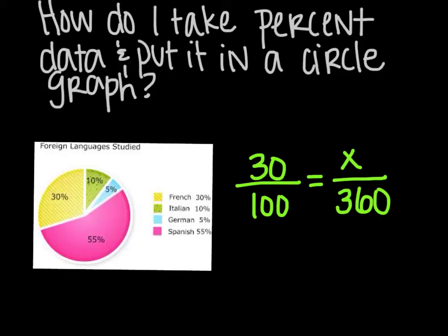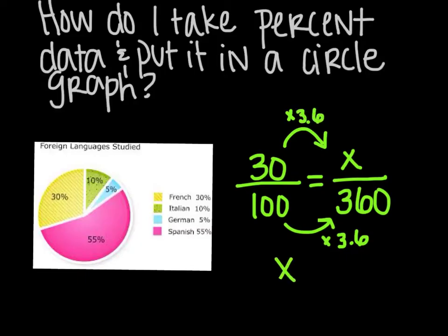So here is our proportion. And from there we can solve. So going from 100 to 360 and multiplying by 3.6. So I'm going to take 30 and multiply that by 3.6. And I get x to equal 108. In other words, it is 108 degrees from here to here. 108 degrees of that circle.